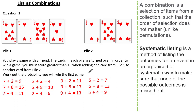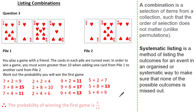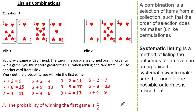Let's work out the probability that we will win the game. We only win when the score is greater than 10. Looking at all our scores greater than 10, we have 15, 11, 11, 17, 13, and 13. Therefore the probability of winning the first game is 6 out of 12, which simplifies to one half. So overall, in order to effectively list all the combinations, it's important to have an organised and systematic approach so that no outcome is missed out. By listing combinations we can identify all our outcomes and then work out a probability.